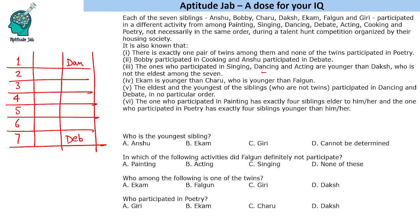It is also given that the eldest and youngest are not twins, so these are unique people — their ages are not equal to anyone else's. It is then given that Anshu is participating in debate, so Anshu is the eldest sibling.